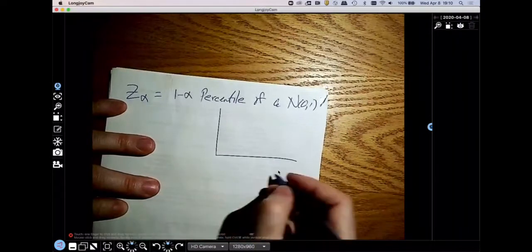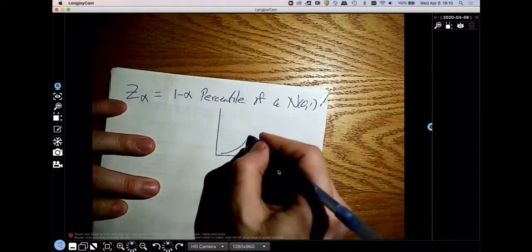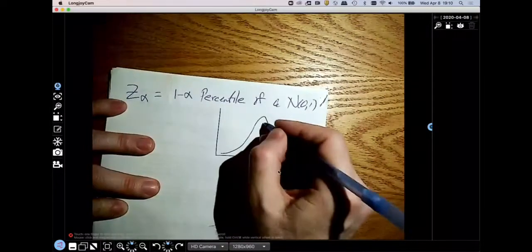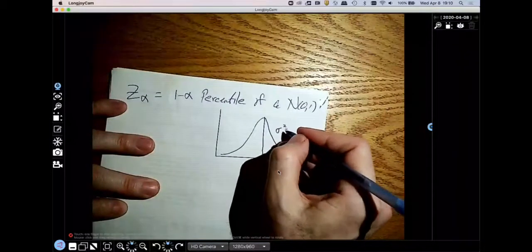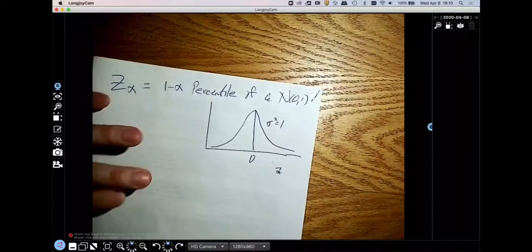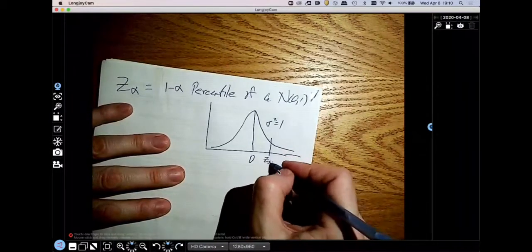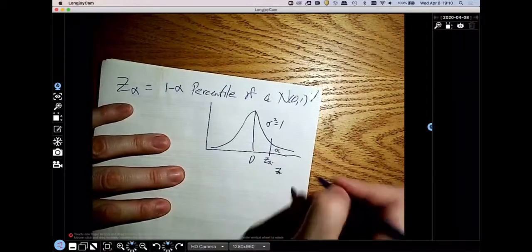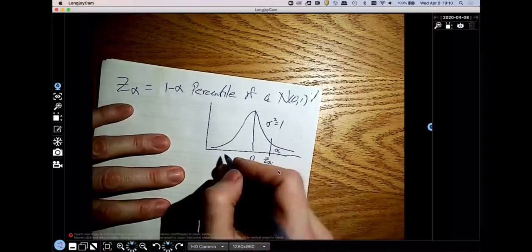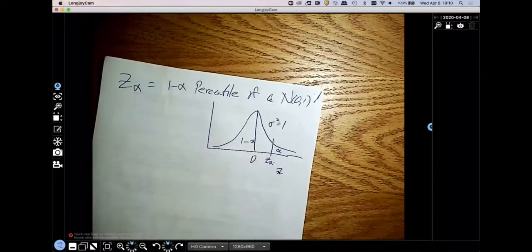So let me just draw a picture. Things are always easier if you draw pictures. If this is a Z distribution, the mean is 0, the variance is 1. The number Z alpha is the point where the area in this tail is alpha and the area to the left is 1 minus alpha. So that's why it's the 1 minus alpha percentile.